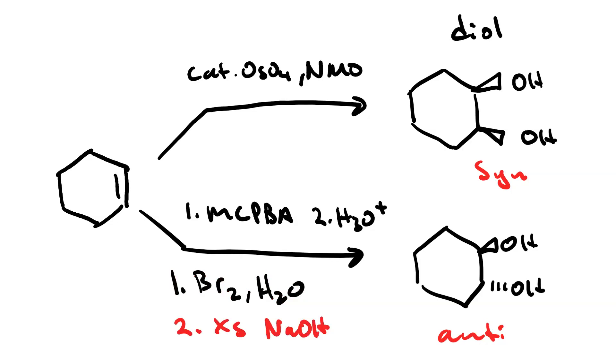Then you treat that halohydrin with excess sodium hydroxide. The first equivalent of sodium hydroxide would deprotonate the hydroxyl group and then it would do intramolecular SN2 on the alpha carbon of the halogen which would create the epoxide. Then the second equivalent of hydroxide would do a ring opening reaction on the epoxide.